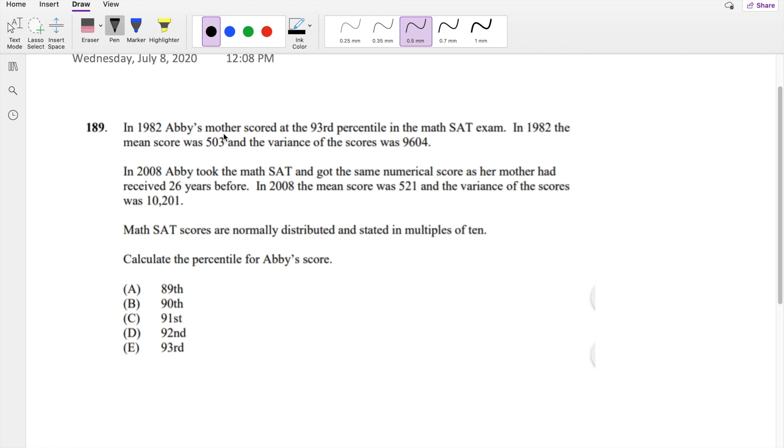So in 1982, Abby's mom scored at the 93rd percentile in the math SAT exam. In 1982, the mean score was—I'm going to say mean 82 equals 503. And the variance, so standard deviation squared, is equal to 9604.